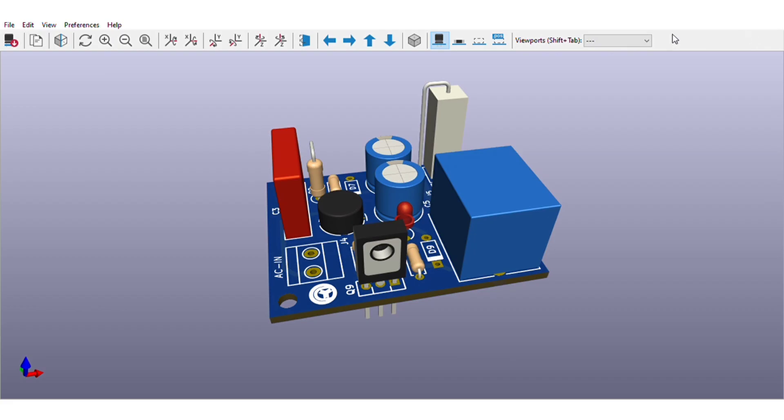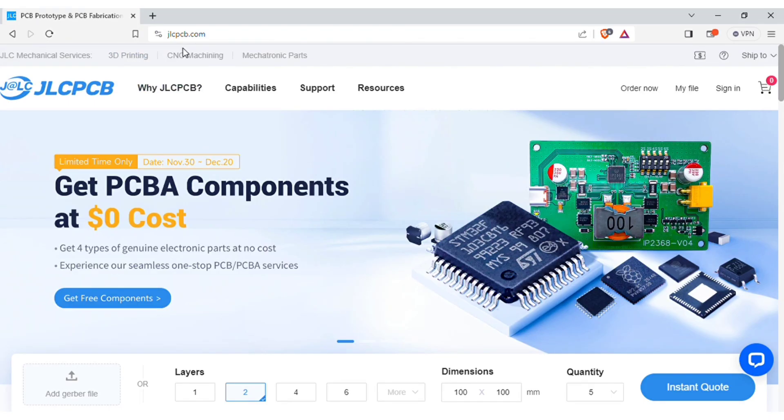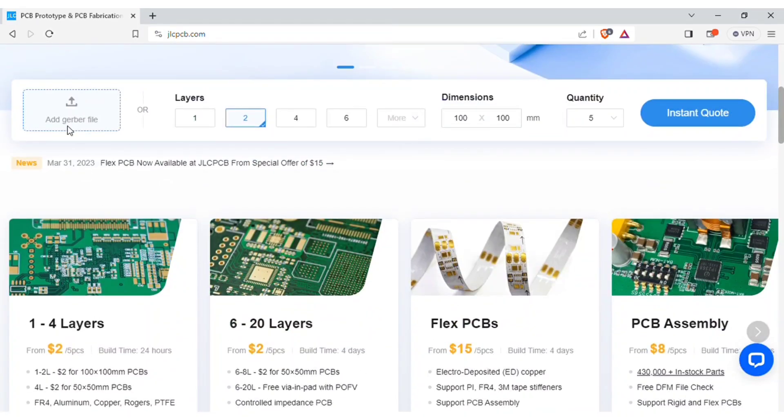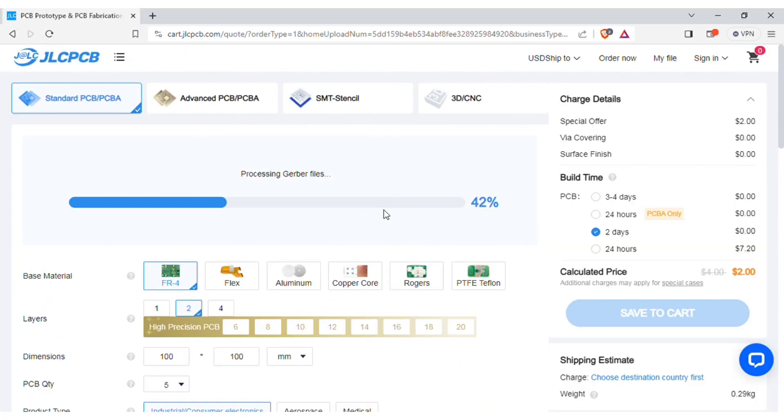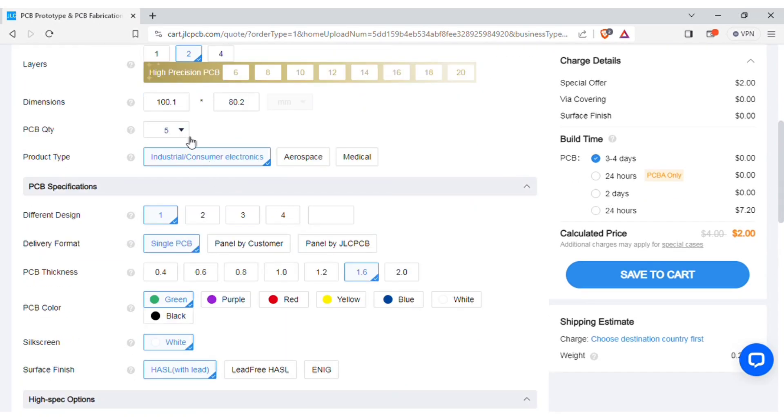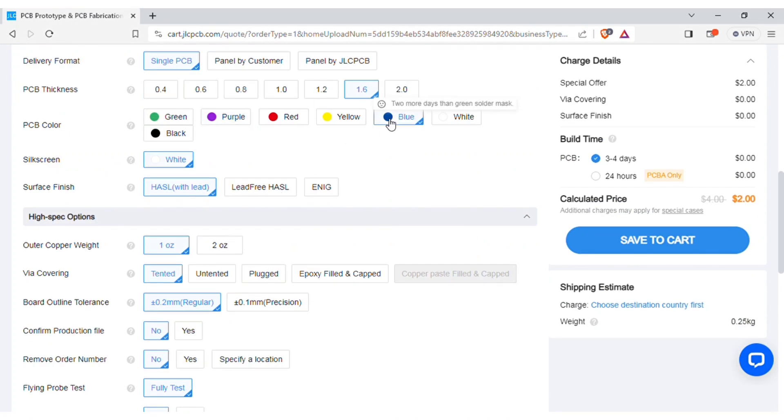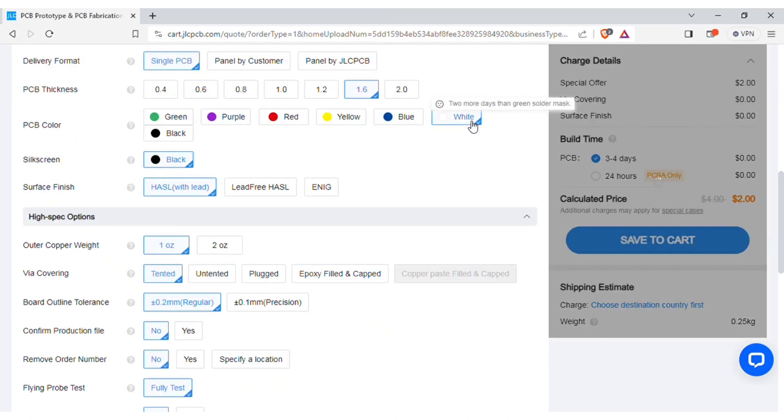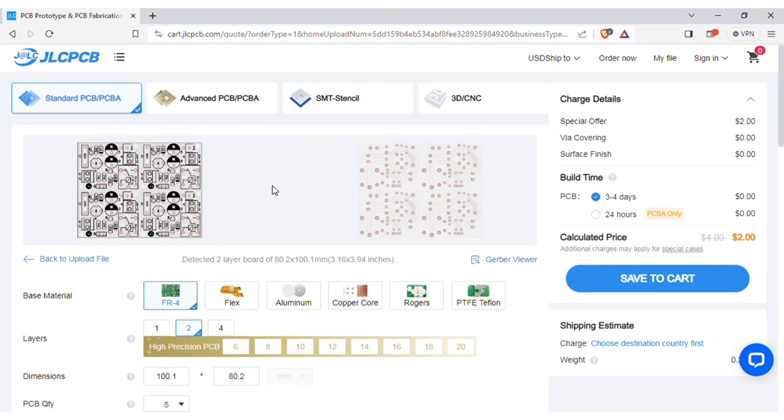In order to manufacture this PCB, visit jlcpcb.com. And here you can add the Gerber file I provided. After uploading, you can see the preview of the PCB. You can also change the quantity and color of PCBs as per your requirements, and then save to cart for checkout.